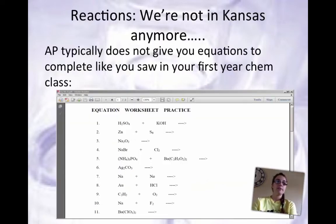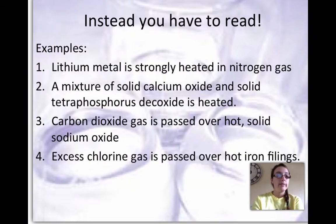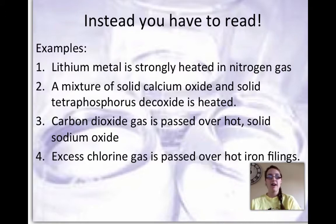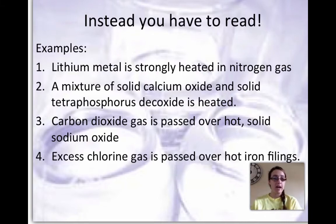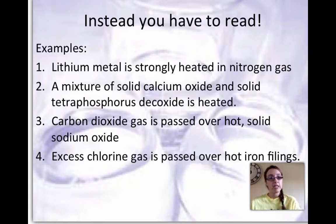With chemical reactions, we're not in Kansas anymore. AP Chem typically does not give you equations to complete like you saw last year. Instead, you have to take it a step further — you have to read every question carefully. You have to know what forms and when things form. In AP chemical reactions, you will have to memorize. For example: lithium metal is strongly heated in nitrogen gas — you have to know what type of reaction it is and what forms.